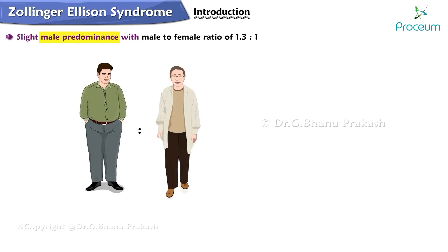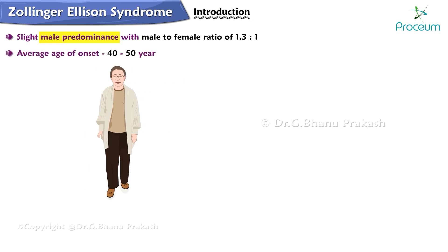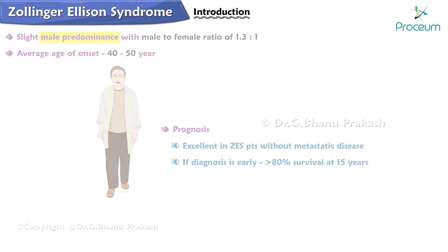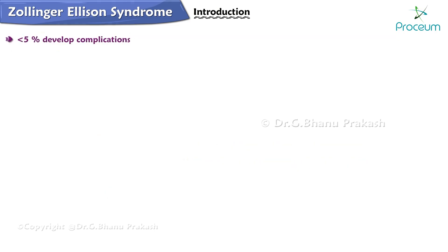Zollinger-Ellison syndrome has a slight male predominance with a male-to-female ratio of 1.3 to 1, and an average age of onset of 40 to 50 years. The prognosis is excellent in those with no metastatic disease, with more than 80% survival at 15 years if diagnosis is early.